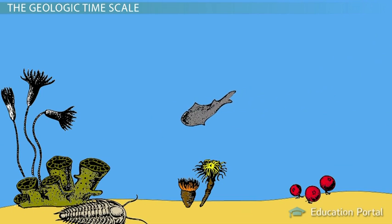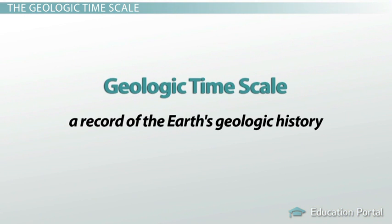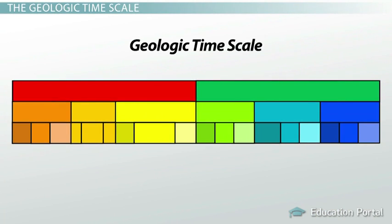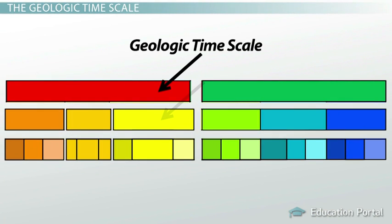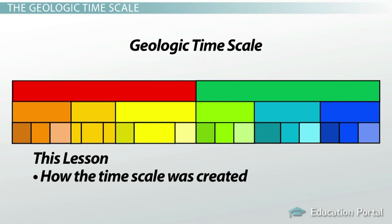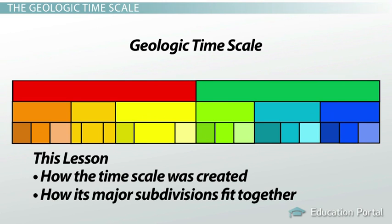To answer these questions, geologists use a special timeline called the Geologic Timescale. It's a record of the Earth's geologic history as scientists have come to understand it by studying the layers in rock. In this lesson, we're going to learn how the timescale was created and how its major subdivisions fit together to tell the story of Earth's history.